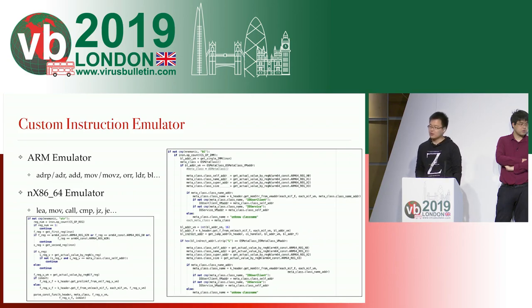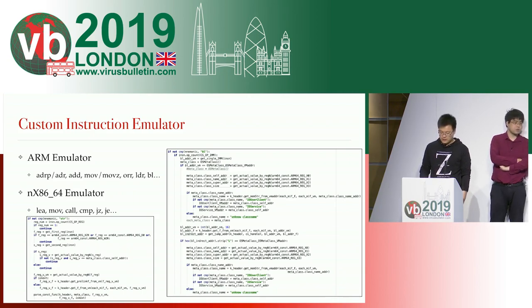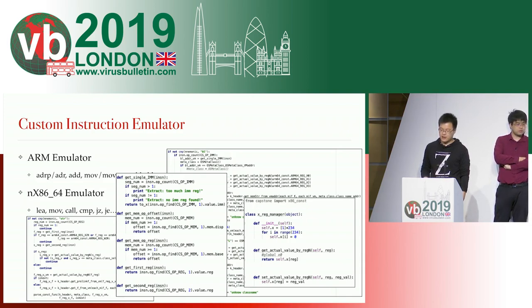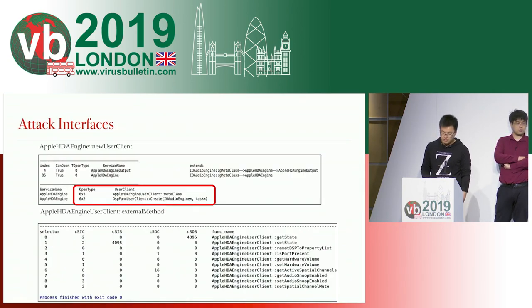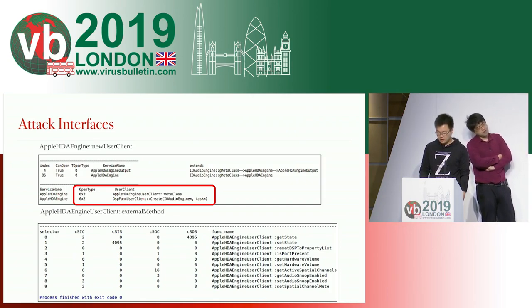Here we list some instructions we emulated, such as ADRP on the ARM platform, and LEA, MOV, and CALL for the x64 platform. These two pictures show some register operation emulation, such as getting the immediate value, offset, and register name from instructions. Based on our tool, this is our output. Here you may find it only contains two connection types, but it actually has three as we mentioned before. This is the shortage of static analysis.